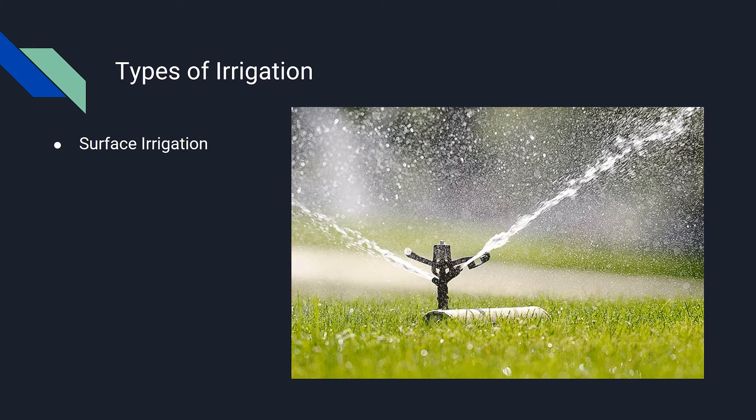Localized Irrigation: In this system, water is applied to each plant through a network of pipes under low pressure. Sprinkler Irrigation: Water is distributed from a central location by overhead high pressure sprinkler, or from a sprinkler on a moving platform.